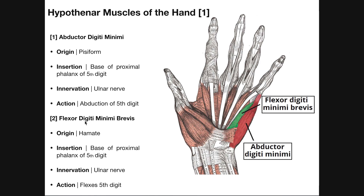The second muscle is flexor digiti minimi brevis, shown here in green. It originates from the hamate, a carpal bone just distal to the pisiform, and inserts just lateral to the insertion of the abductor digiti minimi at the base of the proximal phalanx of the fifth digit. So both muscles share essentially the same insertion, but flexor digiti minimi brevis inserts a bit more laterally — closer to the thumb side. As a result, this muscle is not going to abduct the fifth digit; it's actually going to flex the fifth digit, mainly at the carpometacarpal joint.